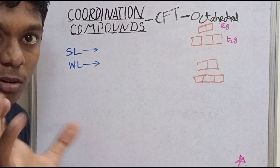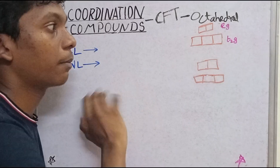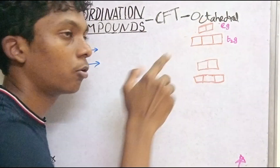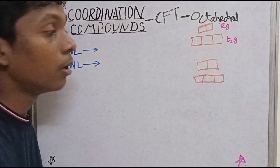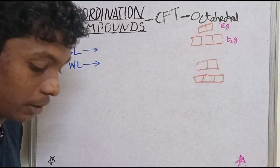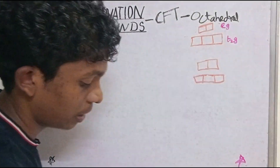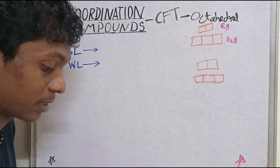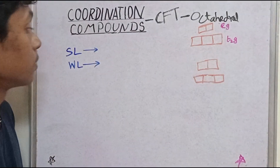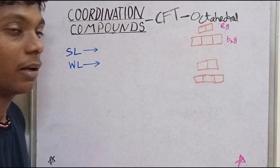Welcome to NEET Preparation Tamil. If you have 10 electrons, you will know how to fill in any order. What we need to do with strong ligand, weak ligand, high spin complex, and low spin complex — how to identify the strong ligand.